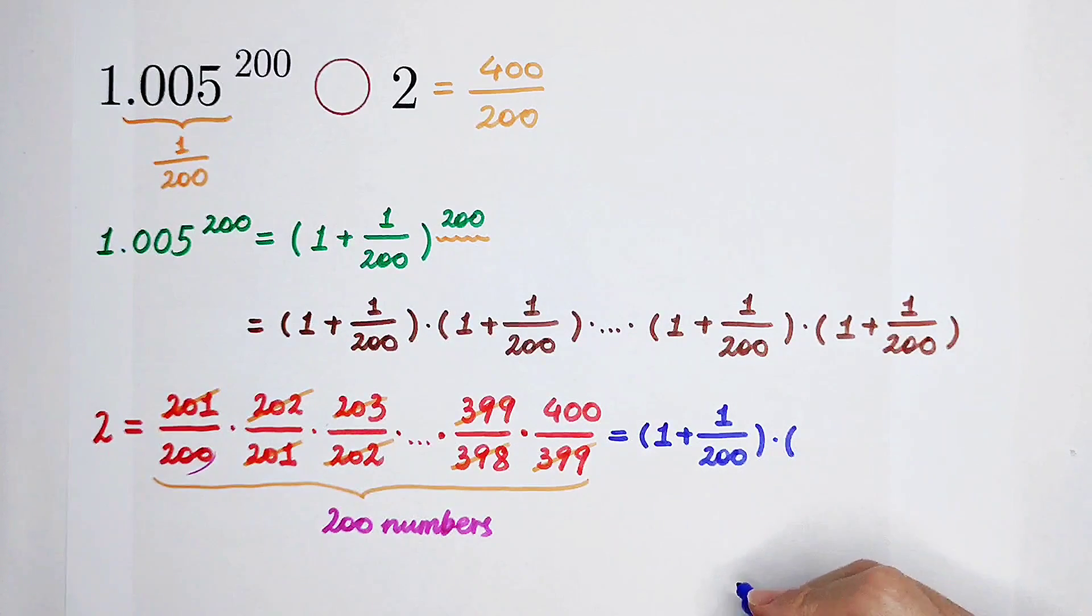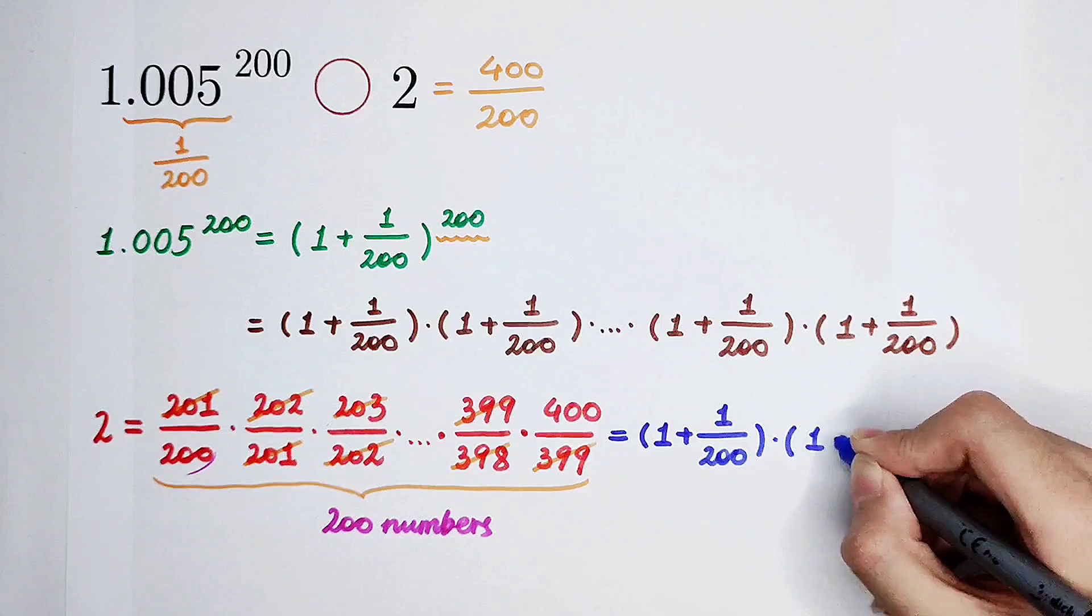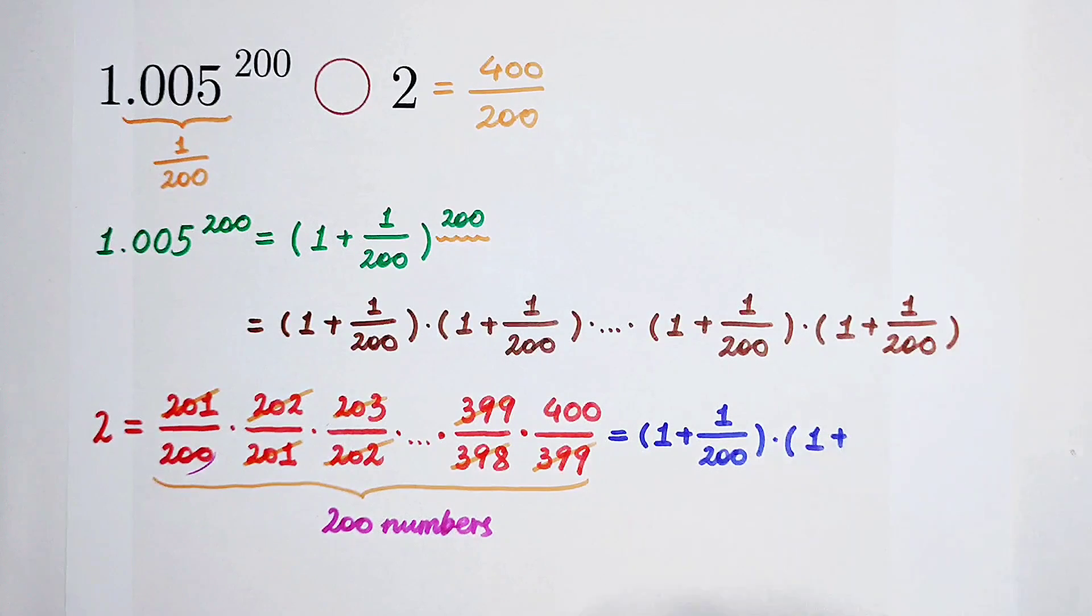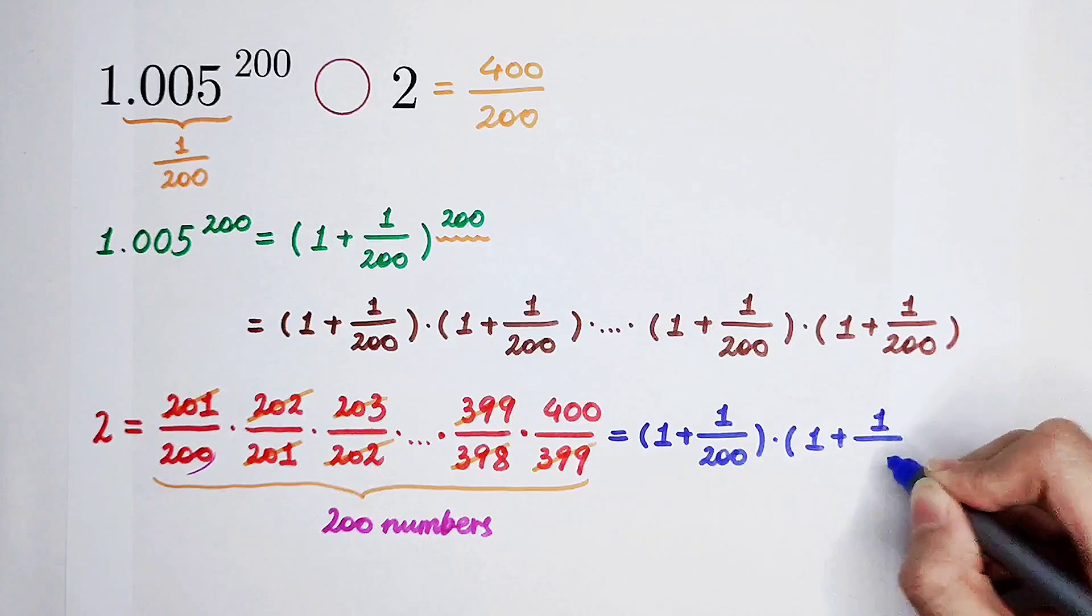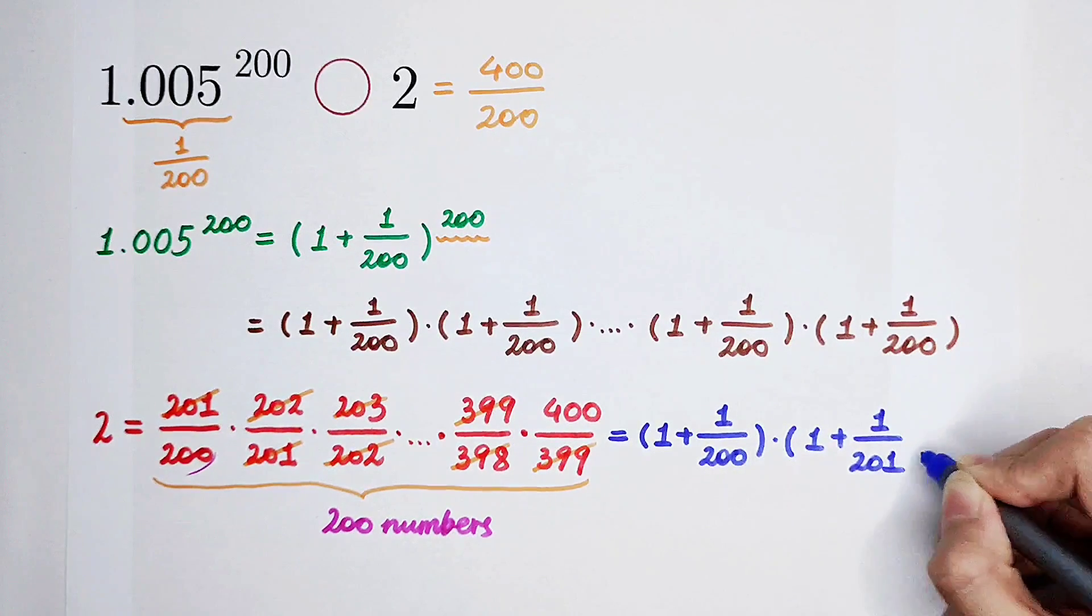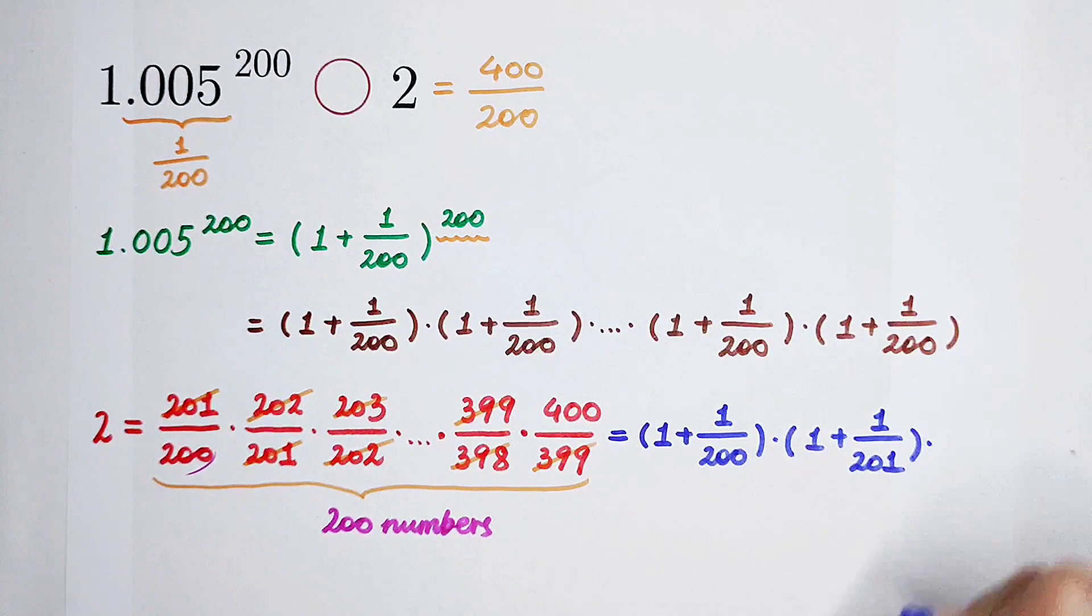The second one, it is 1 plus, the second one is 1 plus 1 over 201. And the third one, 1 plus 1 over 202.